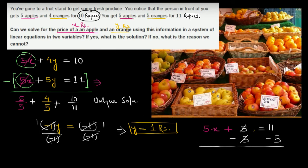Subtracting 5 from both sides, 5x equals 6. Dividing both sides by 5, we get x equals 6/5.